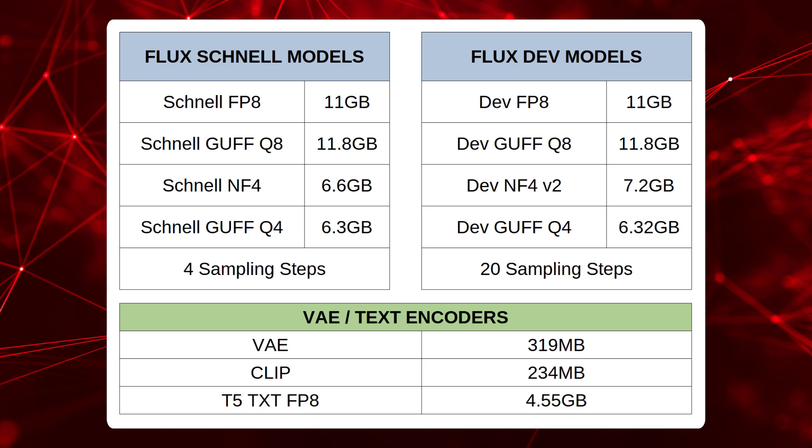For the Schnell models I used 4 sampling steps and for the Dev models I used 20 sampling steps. It could be argued that it's not a fair comparison using different sampling steps, but I wanted to keep them at their recommended lower-end defaults. Schnell benefits from faster total generation times and Dev from perhaps better image quality. Increasing Schnell steps to Dev levels would produce worse image quality, and lowering Dev steps too far would generate incomplete images — so 4 and 20 it is.